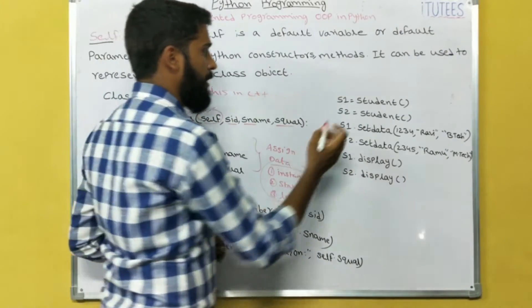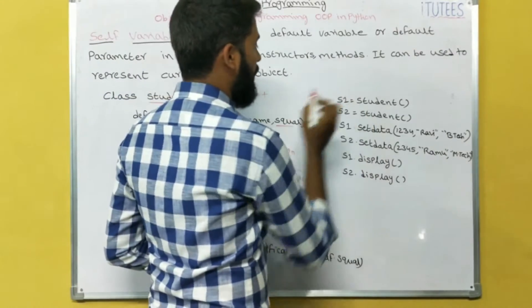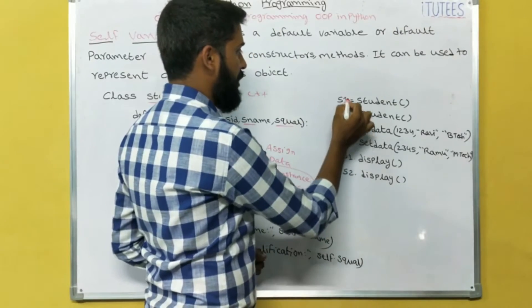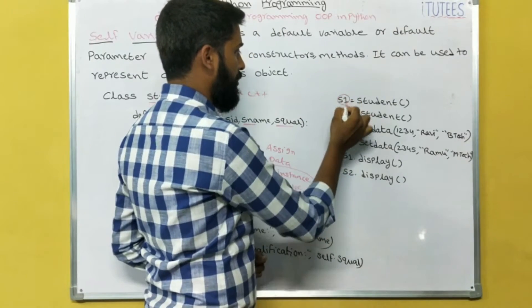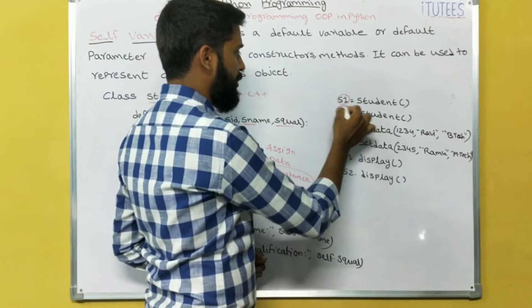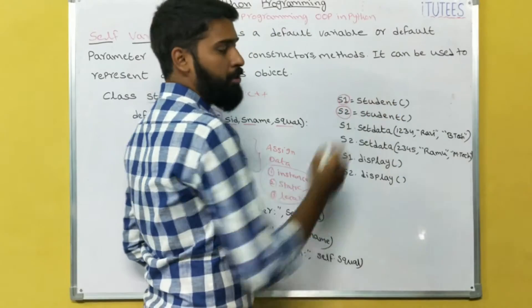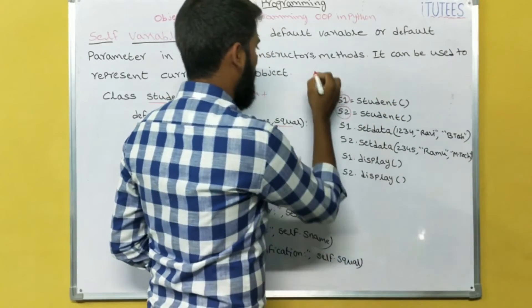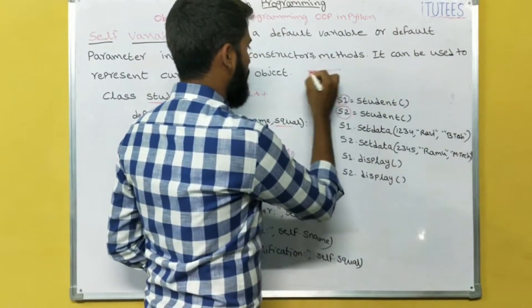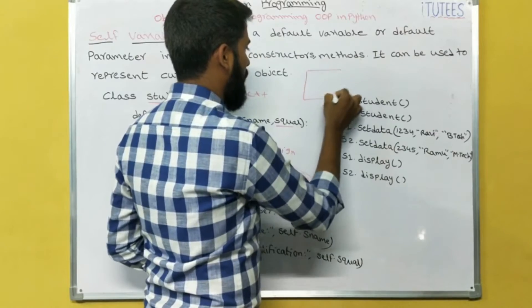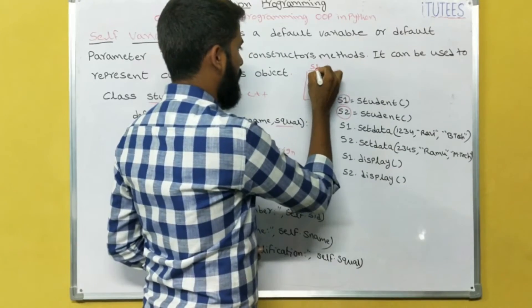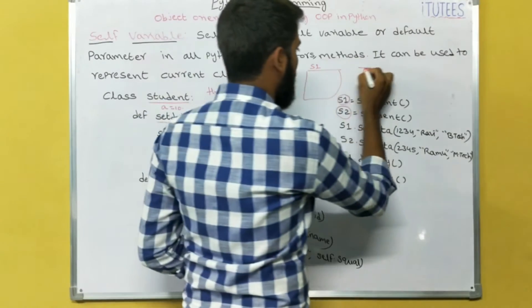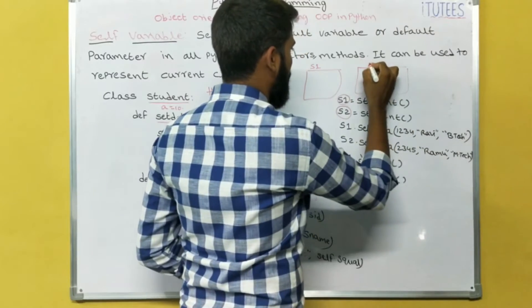Now we are creating two objects: one is S1 and another one is S2. S1 equals to Student — that means S1 is one object. Similarly, S2 is another object.